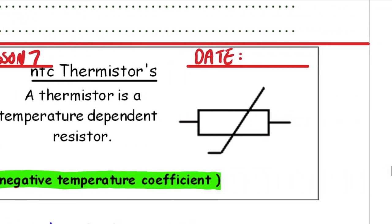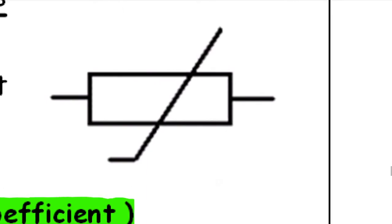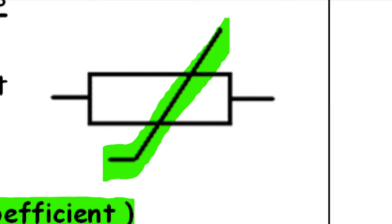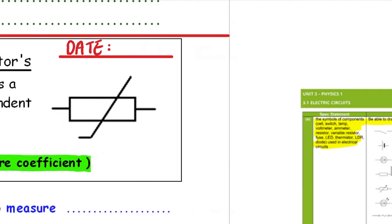The symbol for a thermistor is almost exactly the same as that for a fixed resistor, but it has two lines through it. Think of a resistor and put those two lines through it. So the top one is the fixed resistor, a variable resistor has an arrow through it, and a thermistor has those diagonal lines. Bear that in mind - it might help you.